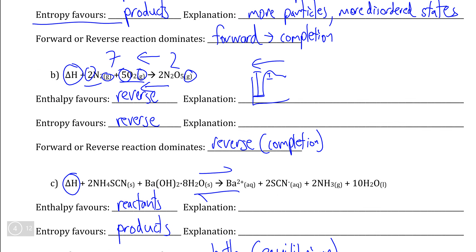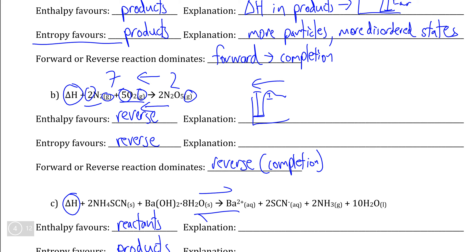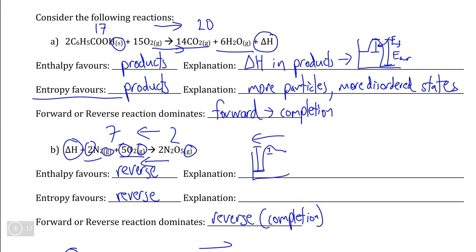In the next video, we're going to look at how to assign numerical values to entropy, so that if we're ever given ambiguous situations of a chemical reaction where it's impossible to tell which side is favored by entropy, we can mathematically calculate which side is favored by entropy.